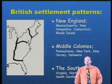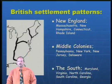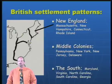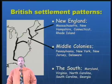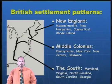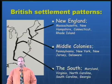When it came to British settlement patterns, the British settled in New England — Massachusetts, New Hampshire, Connecticut, and Rhode Island — the Middle Colonies — Pennsylvania, New York, New Jersey, and Delaware — and the Southern Colonies, which included Maryland, Virginia, North and South Carolina, and Georgia.